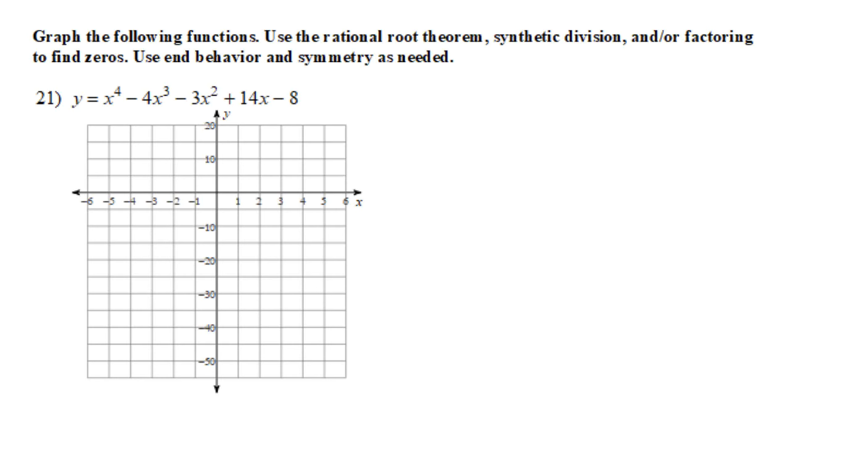Our final question for this chapter 2 review, same idea as number 20. So there are five terms here. We can't do factoring by grouping, so we'll go ahead and use C over D, C factors of the constant.